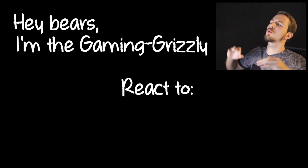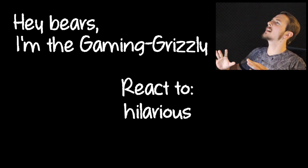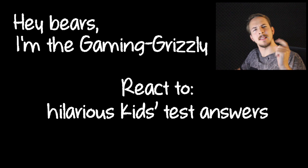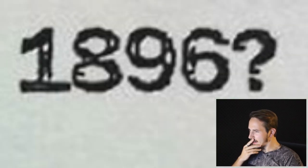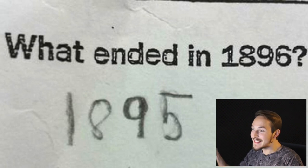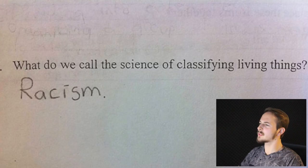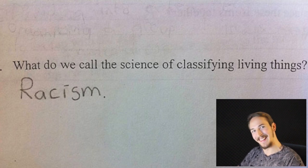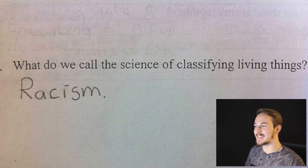Today I want to react to hilarious kids' test answers. So let's start it. What ended in 1896? Answer: 1895. Well, obviously. What do we call the science of classifying living things? Racism. Well yeah, that kid's answer is totally true.